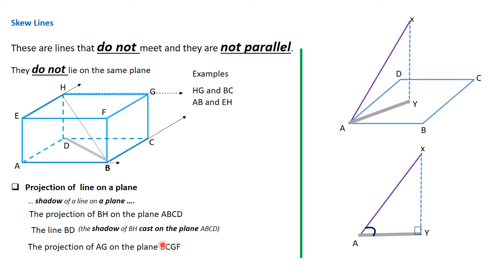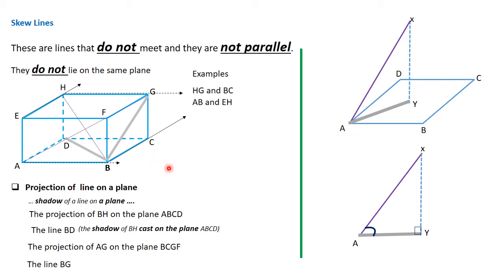The projection of the line AG, from A to G, on the plane BCGF — the answer would be BG. The reason is, if this line AG casts a shadow on BCGF, the light comes horizontally from beyond the plane ADHE, and therefore the point A would fall on B, and all points along AG would fall somewhere along the line BG. Therefore, the line BG is that projection, since it's the shadow of AG cast on the plane BCGF.